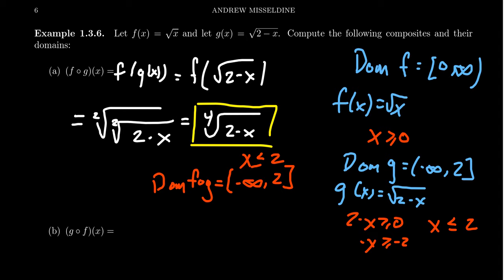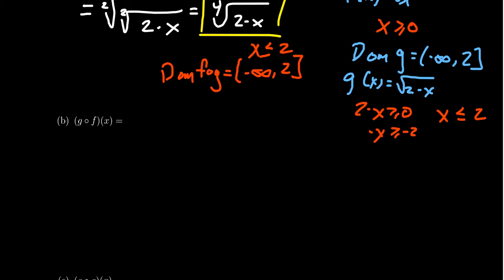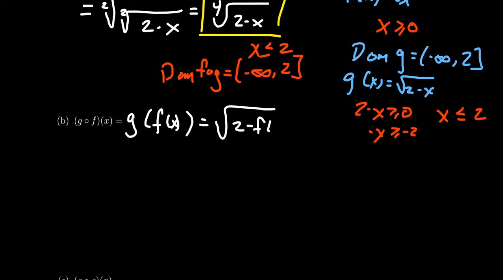That's not always the case — we're going to see something very different in the next example. If we take g of f of x, we put f inside of g. This time, evaluating the outside function first: g takes the square root of 2 minus x, but instead of x we put f of x, which is the square root of x. So we get the square root of 2 minus the square root of x. We do have a nested square root, but unlike the last example, we can't compound those together to make a fourth root, so identifying the domain is going to be a little trickier.